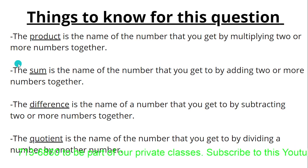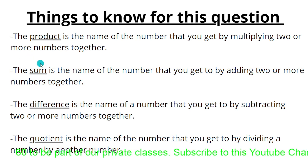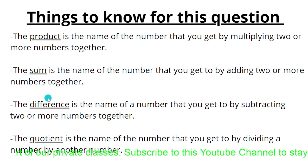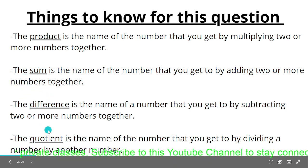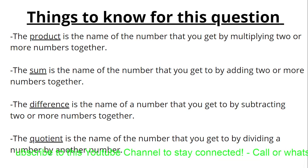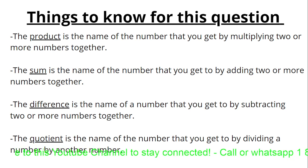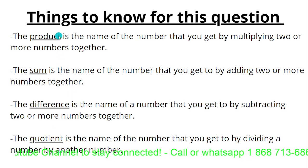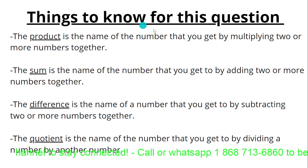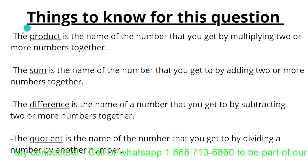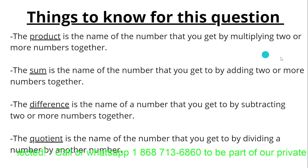I've also added other terms — what does the sum mean in mathematics, what does the difference mean, and what does the quotient mean. You can pause the video here to look at those and write the notes. But for this question, you need to know what the product means: the name of the number that you get by multiplying two or more numbers together.